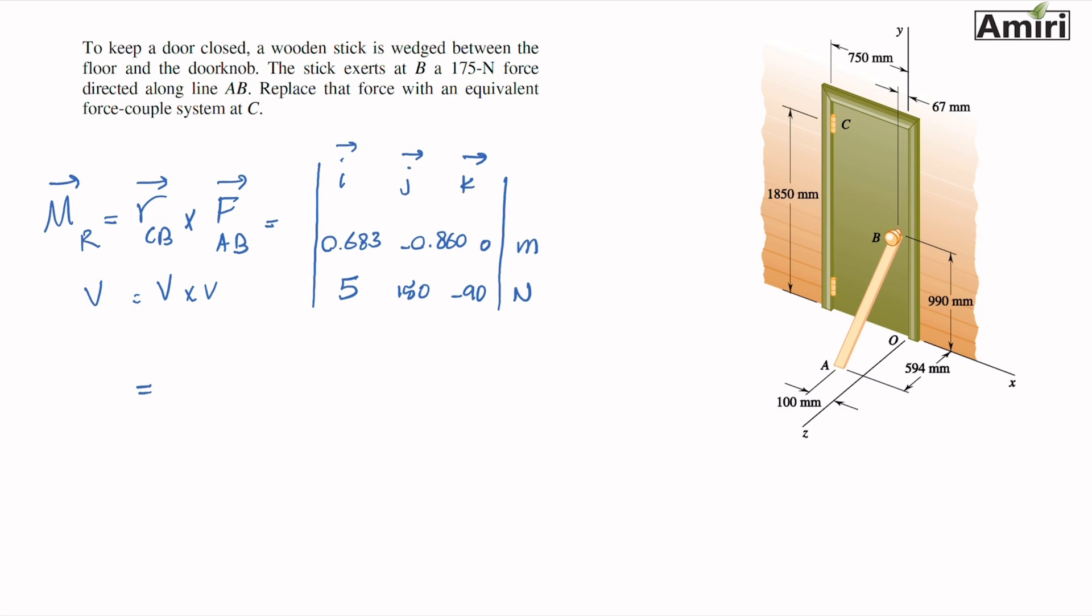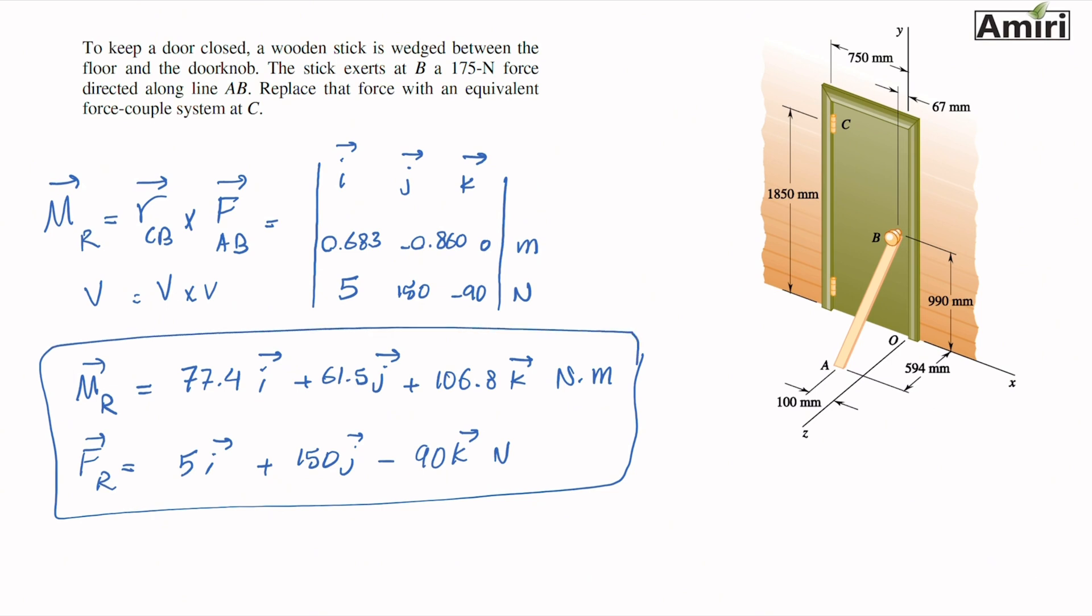If you do the calculation - again, I have a full lecture on this one explaining the calculation, I do it in a lot of other examples - you will end up with 77.4i, 61.5j, 106.8k. The units are newton meters, and this is your equivalent moment. I'll write FR here one more time. These two are your final answers for this problem. Thank you.